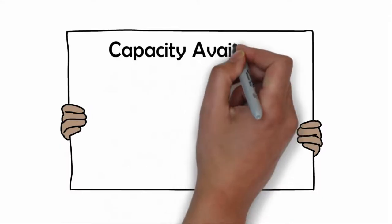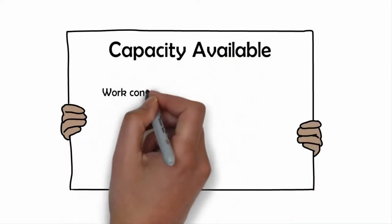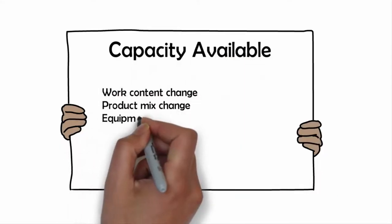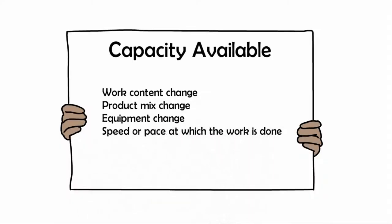Capacity available is affected by work content change, product mix change, equipment change, speed or pace at which the work is done.